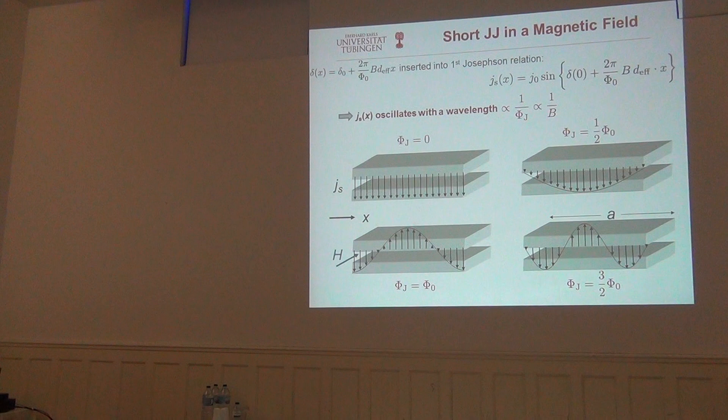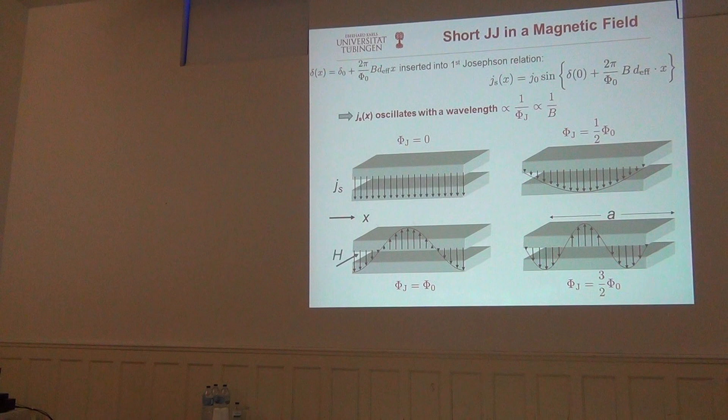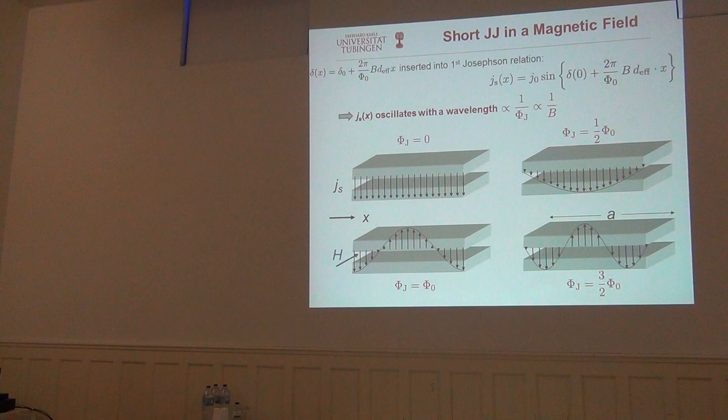This has some important consequence for the overall supercurrent which you can measure across the junction. If you take this result for the spatial variation of the phase difference along the junction and insert it into the first Josephson relation, you immediately see that the supercurrent density now oscillates in space. It oscillates with a wavelength which is given by the inverse of this induced magnetic flux phi_j, or the induced magnetic induction B.